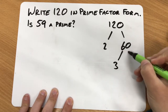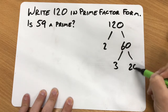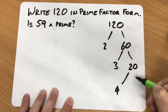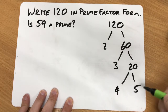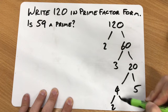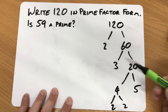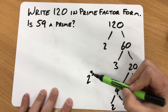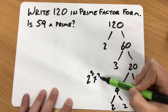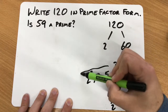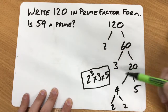Splitting the 20 into 4 and 5, and splitting that 4 into 2 and 2. Different people lay it out differently, but ultimately we've got our prime factor form for that number.